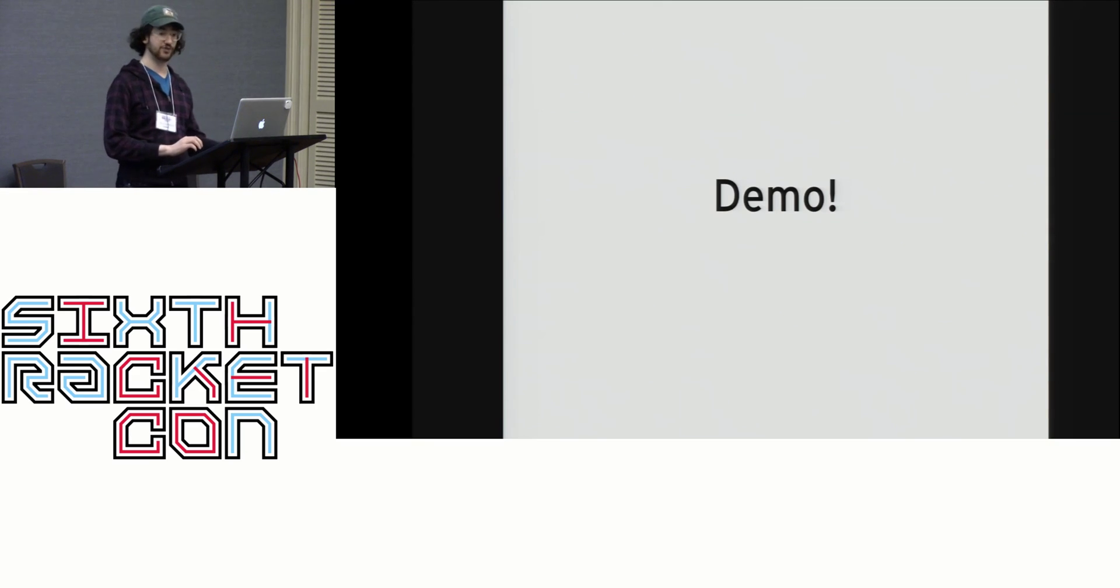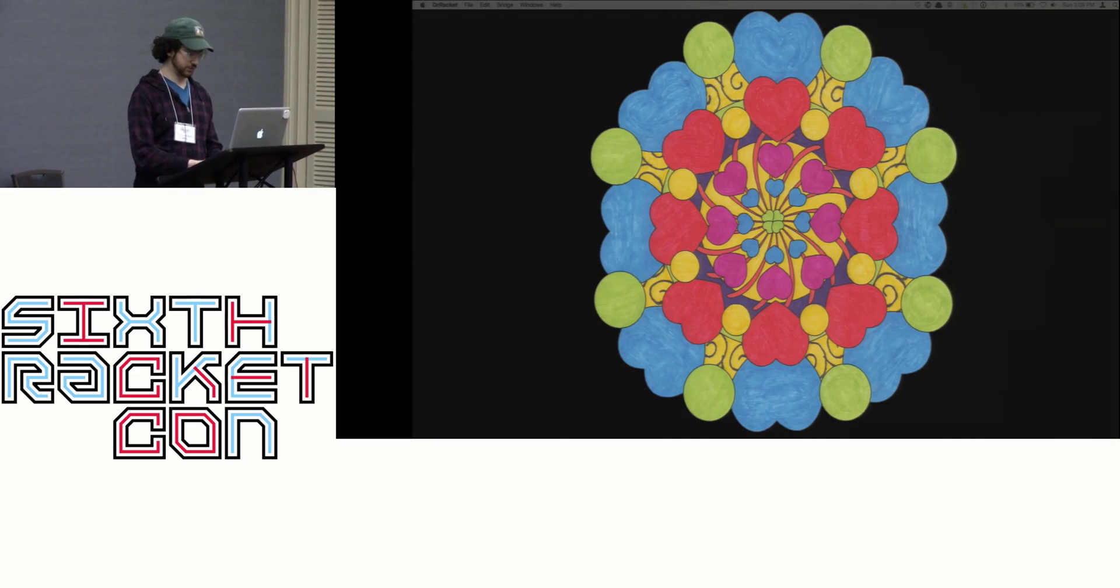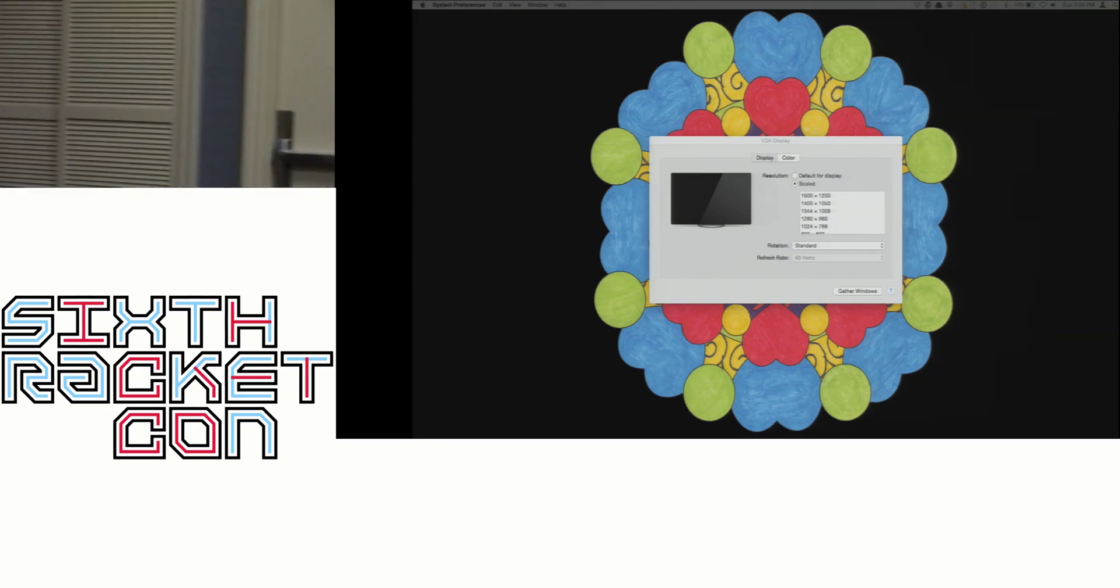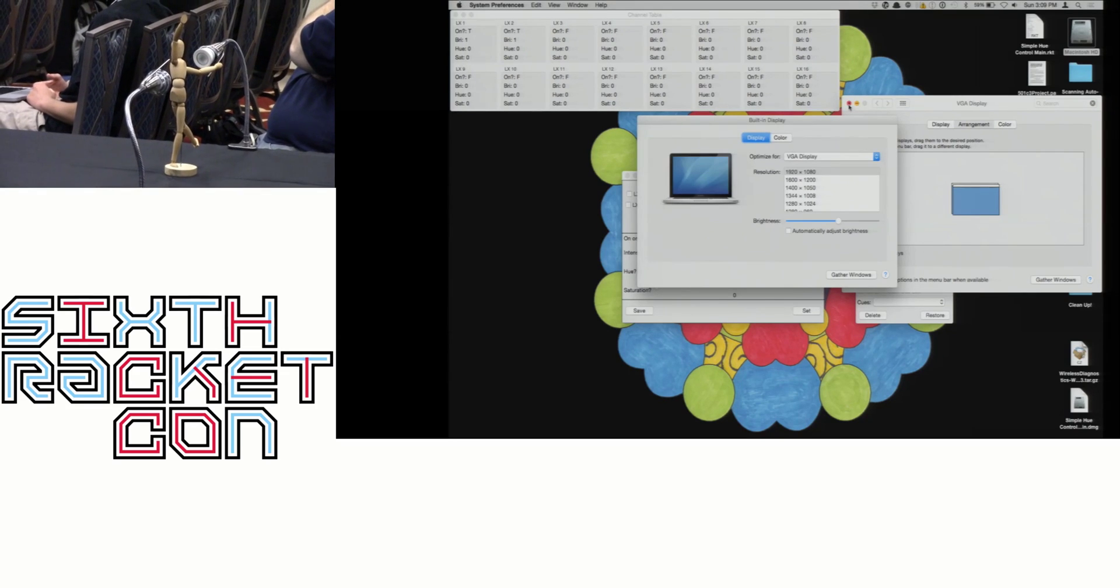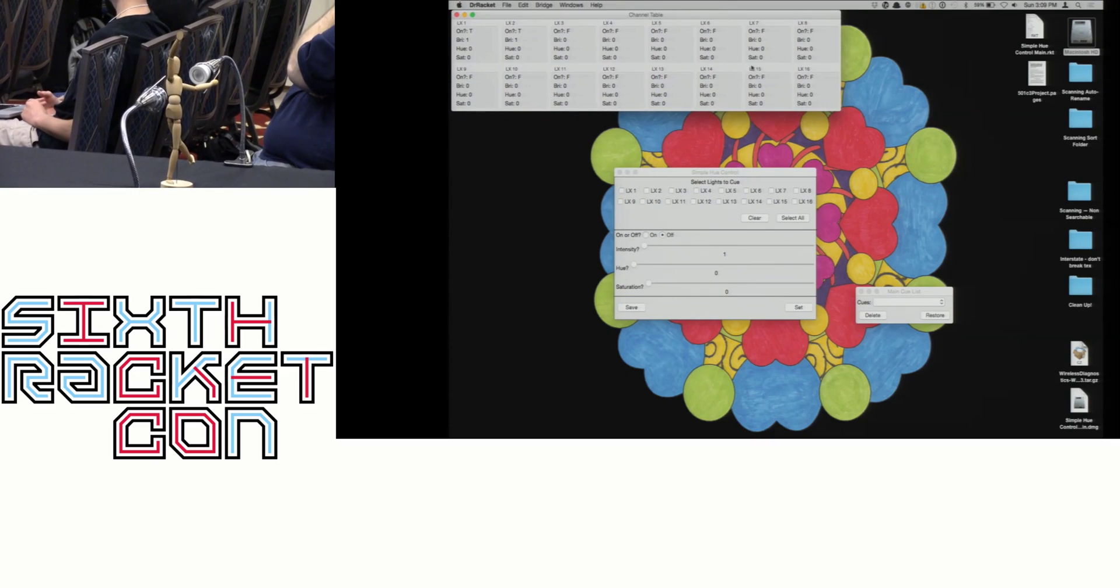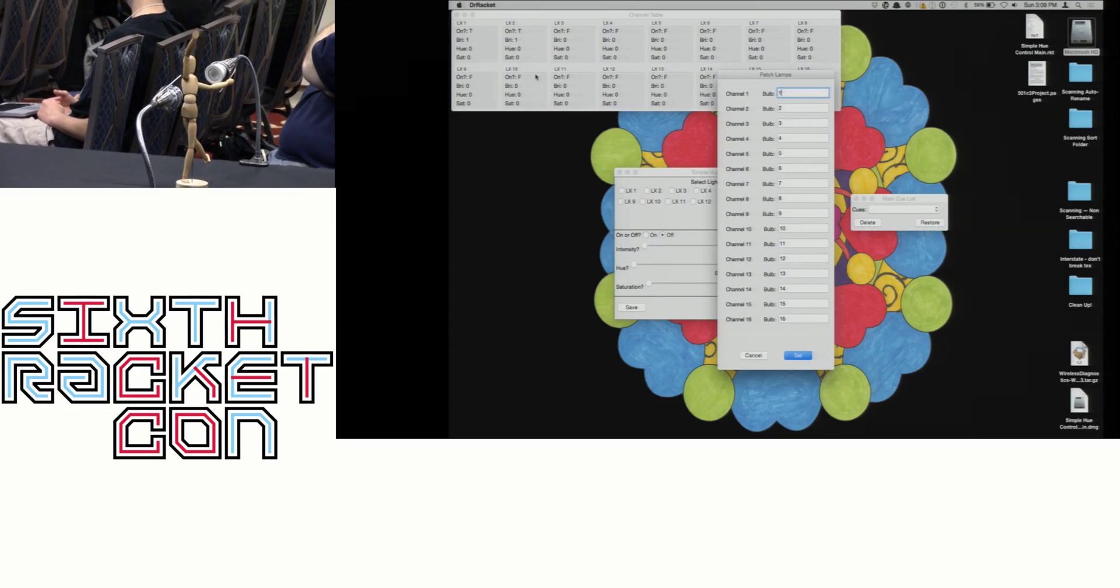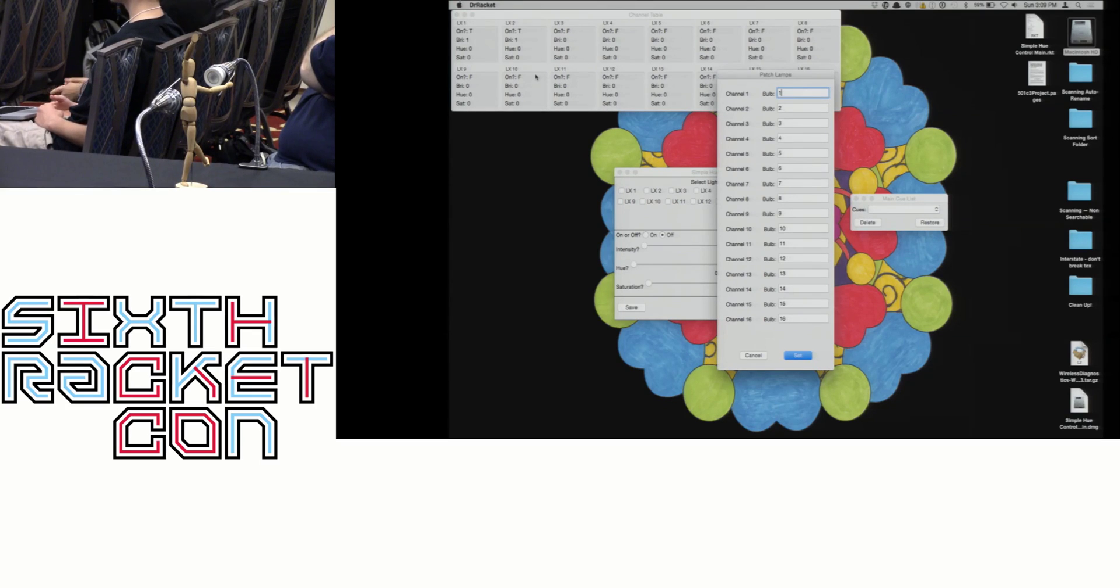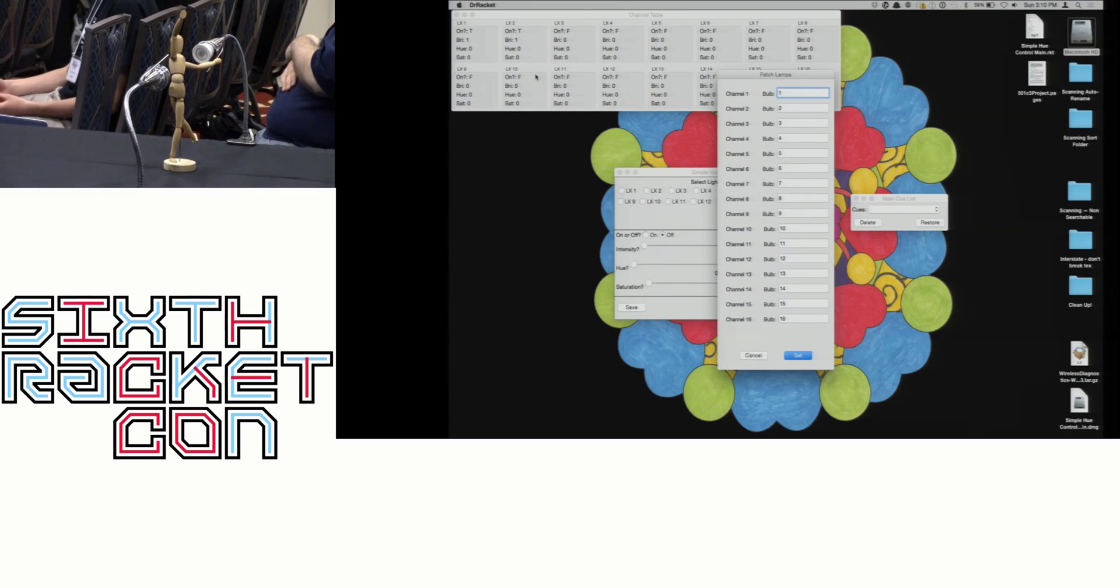And now for a little demo. So, you can't really see it on this screen, but here's our main control window. Here's our lighting state window. And here's our cue window. Now, first I'm going to patch the lights. And patching refers to the way we create a reference from the physical address of the light to a conceptual channel, which we can control. For instance, here on the left light is bulb 19, and the right light is bulb 20. However, I only have 16 channels in this. So, I'm going to patch bulb 19 to channel 1, bulb 20 to channel 2.